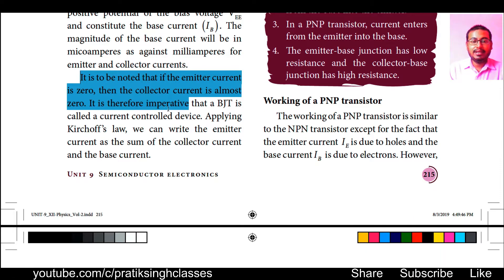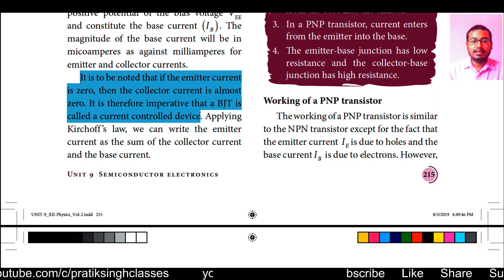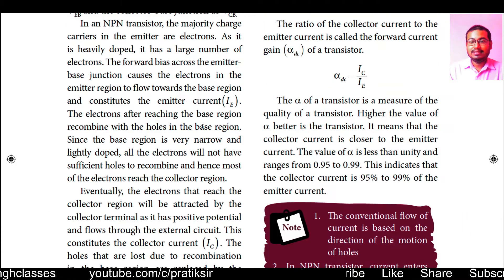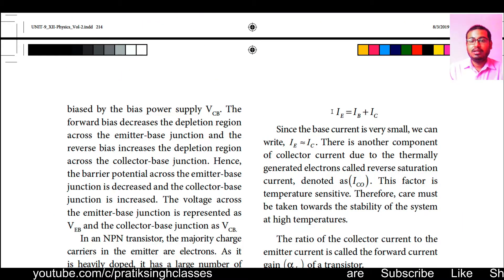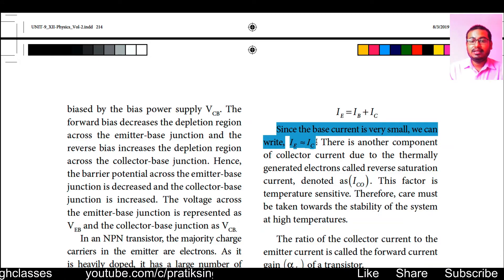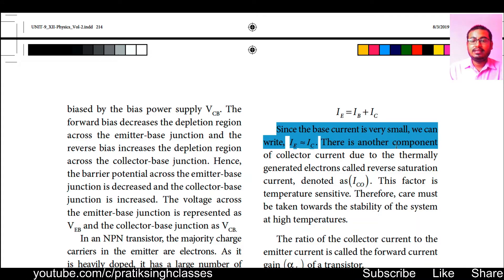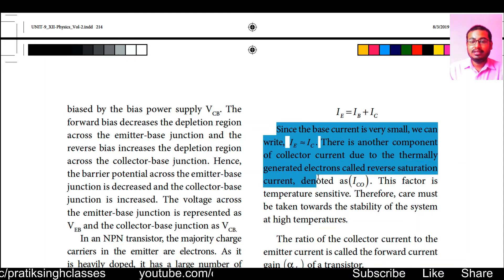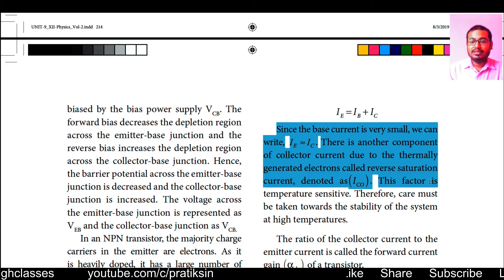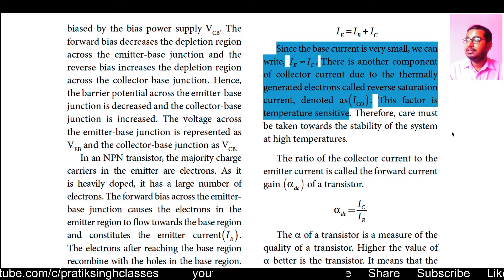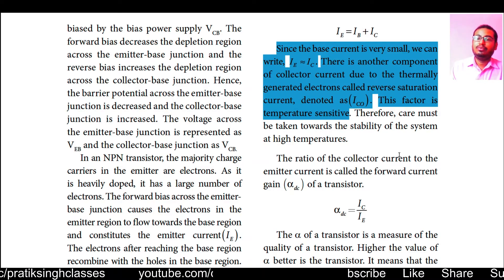If the emitter current is zero, the collector current is almost zero. Therefore a BJT is called a current-controlled device. Applying Kirchhoff's law, the emitter current equals the sum of collector current and base current: IE = IB + IC. Since the base current is very small, we can write IE ≈ IC approximately. There is another component called the reverse saturation current ICO, due to thermally generated electrons, which is temperature sensitive.